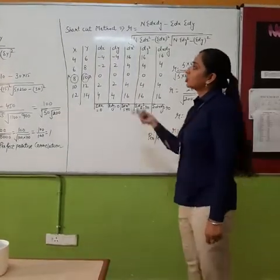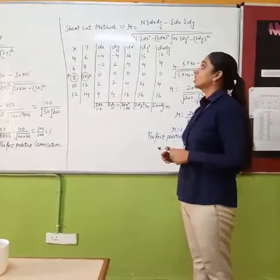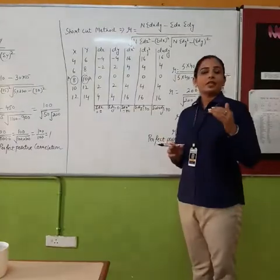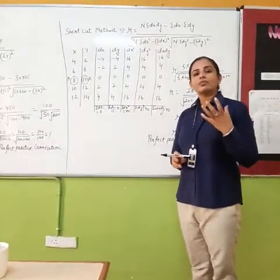So in this video we will see the short cut method to find out the correlation coefficient. In short cut method we know that we need to find out dx and dy. And how to find out dx and dy?